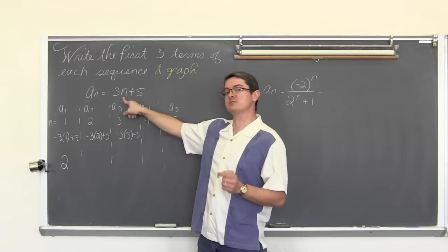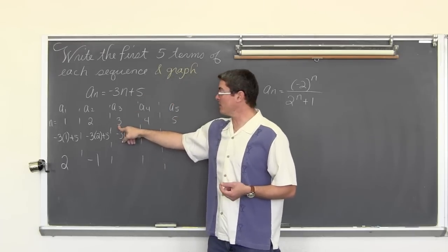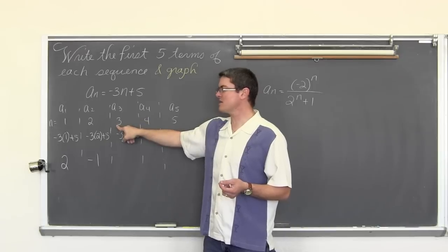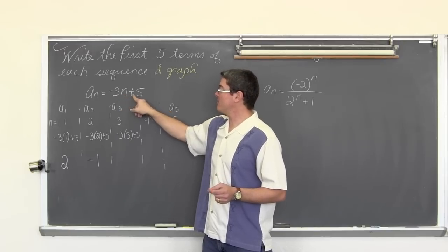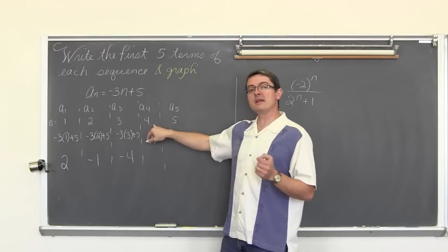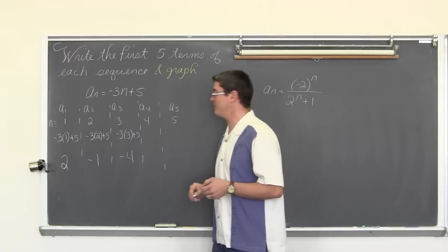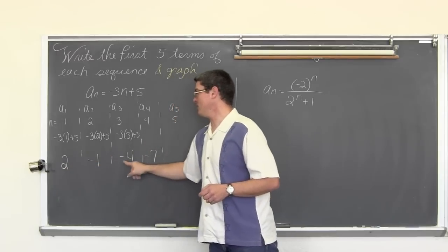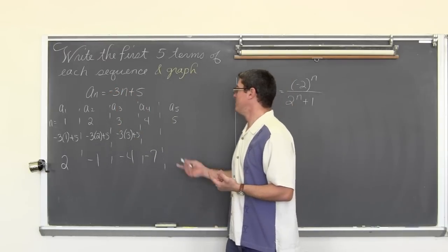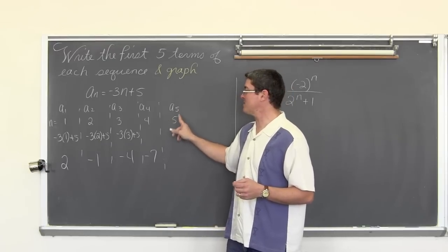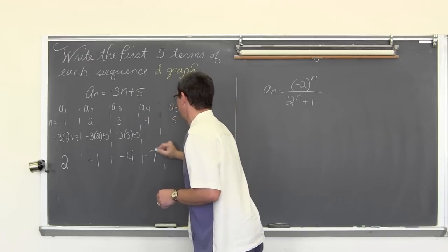Now plug in n equals 2: negative 3 times 2 is negative 6, and negative 6 plus 5 is negative 1. For n equals 3: negative 3 times 3 is negative 9, and negative 9 plus 5 is negative 4. For n equals 4: negative 3 times 4 is negative 12, and negative 12 plus 5 is negative 7. You might notice the values are going down by a consistent value of 3 because it is negative 3 times n — a linear function. For n equals 5: negative 3 times 5 is negative 15, and negative 15 plus 5 is negative 10.